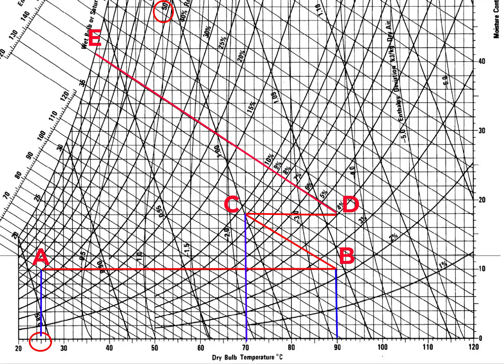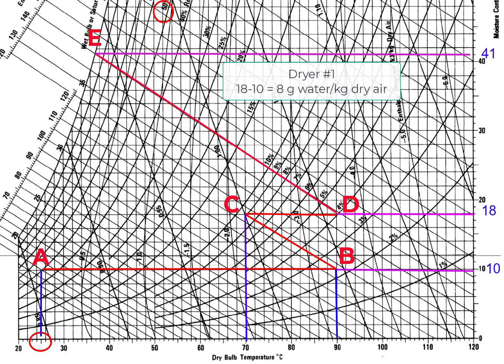Now we can read the values of moisture content or humidity ratios at various locations. For point E the humidity ratio is 41 grams of water per kilogram of dry air. For location D the humidity ratio is 18 grams of water per kilogram of dry air. For location B the humidity ratio is 10 grams of water per kilogram of dry air.